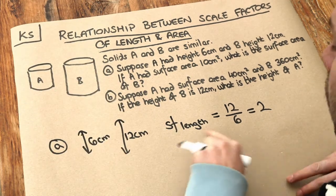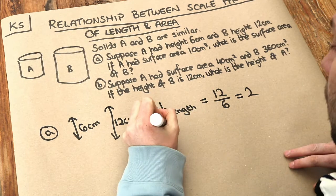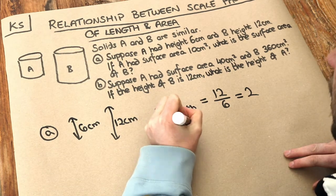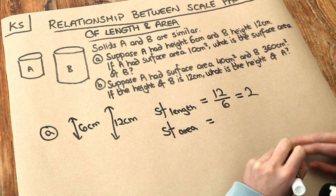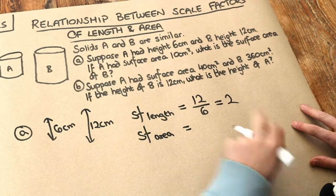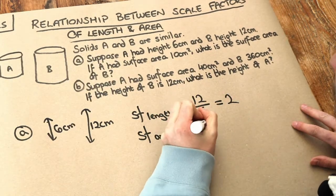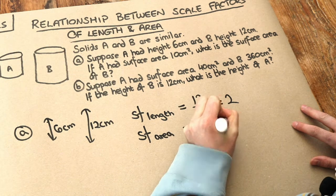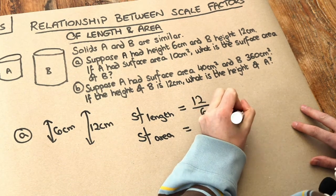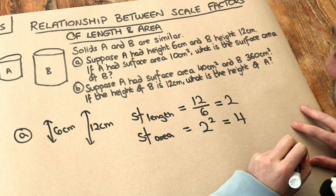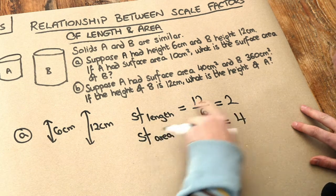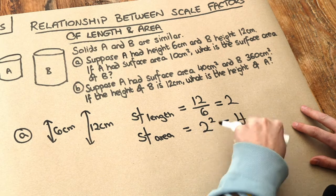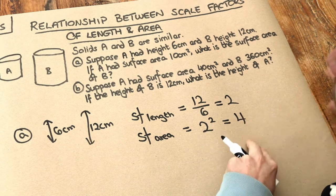Now if we know the scale factor of length we can get the scale factor of area or surface area. The way we do that is we take the scale factor of length and square it. So we do 2 squared and that gives us a scale factor of area of 4. If the scale factor of length were 3, then the scale factor of surface area would be 3 squared which would be 9, and so on.